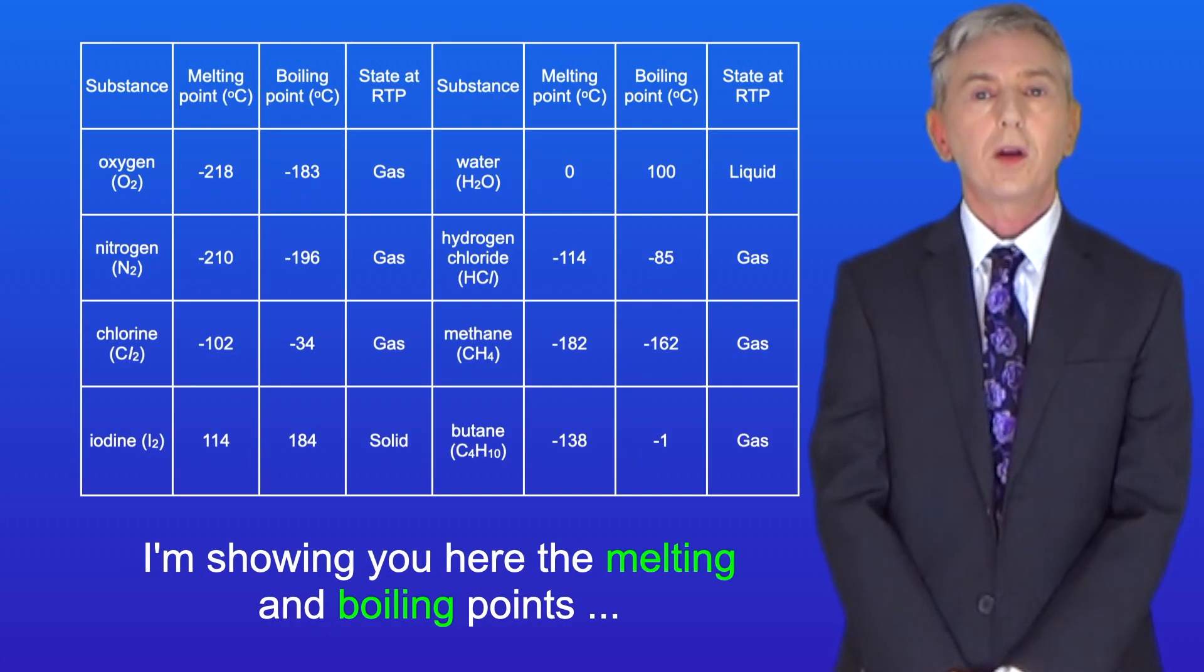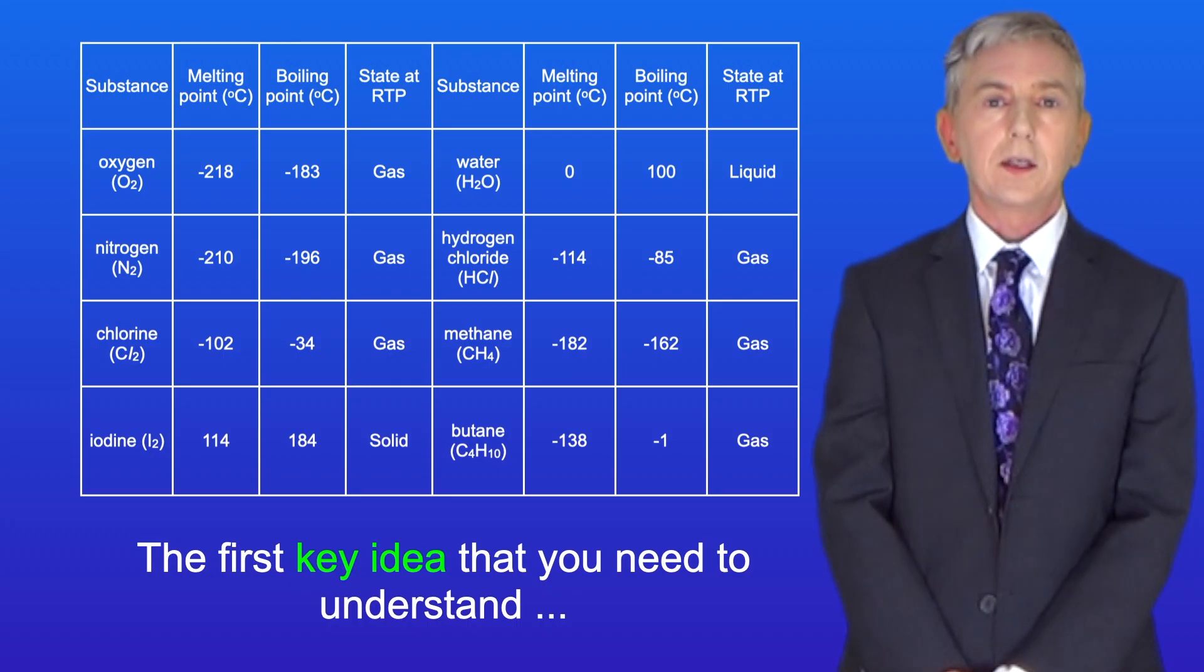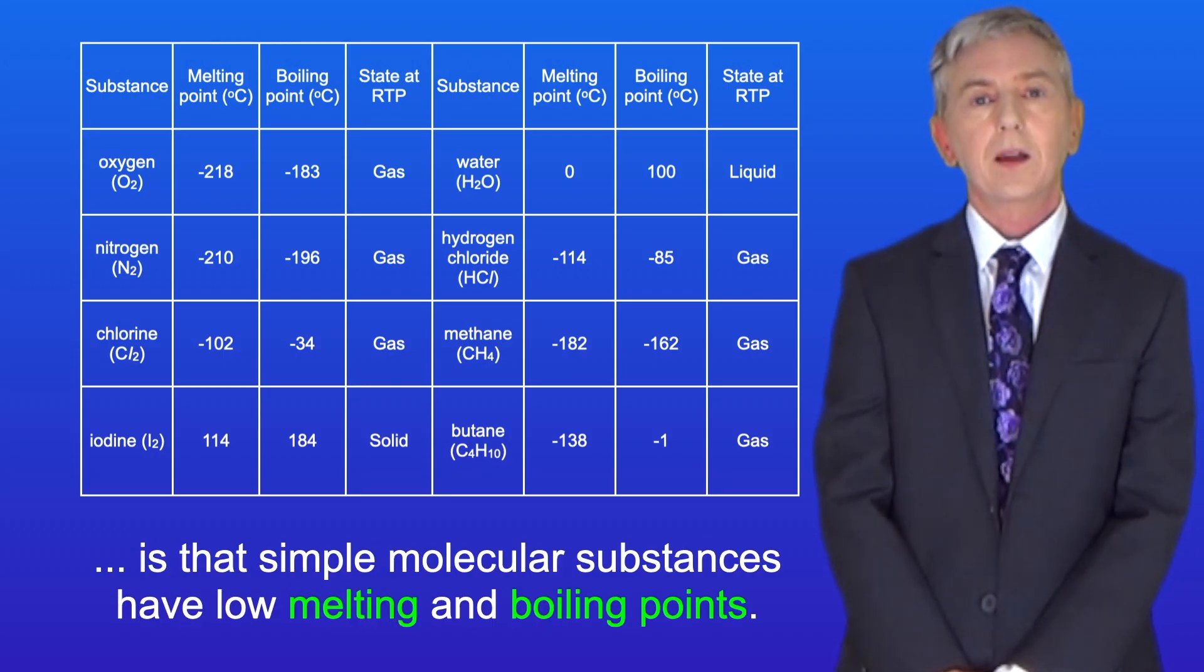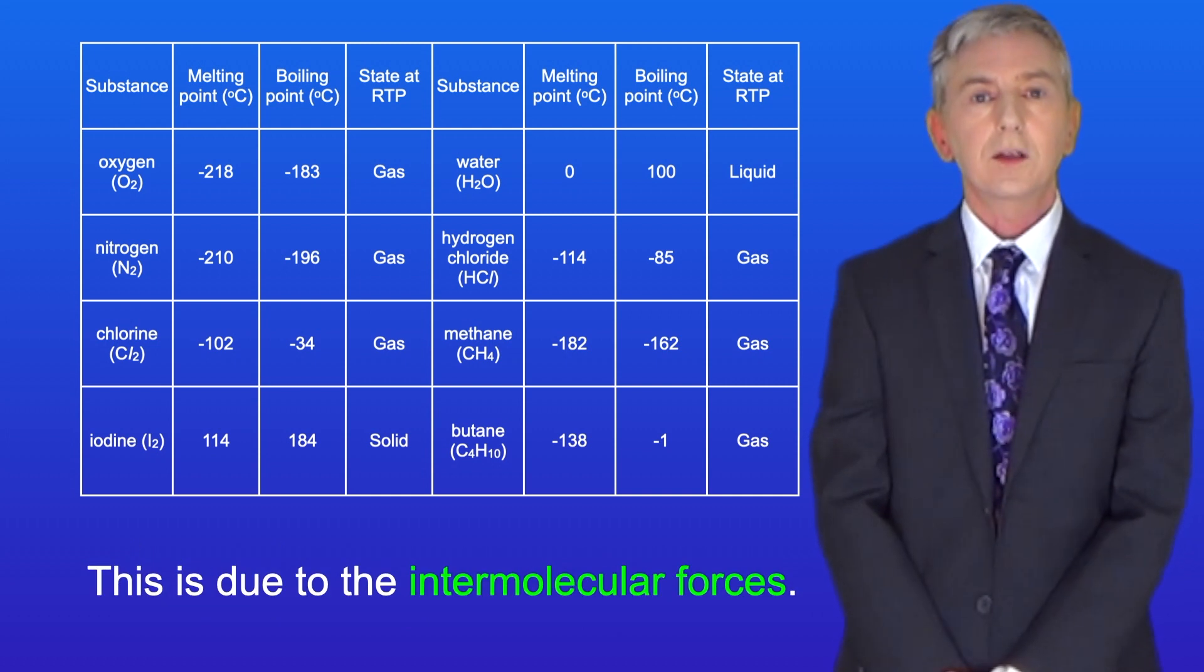I'm showing you here the melting and boiling points of some simple molecular substances. Now the first key idea you need to understand is that simple molecular substances have low melting and boiling points and this is due to the intermolecular forces.